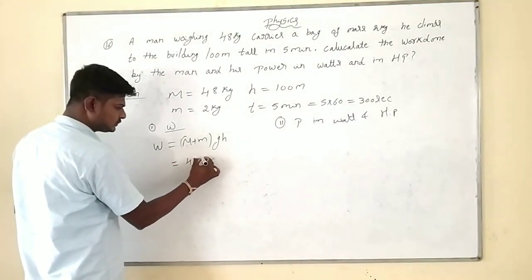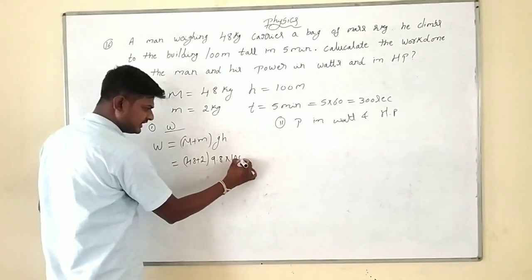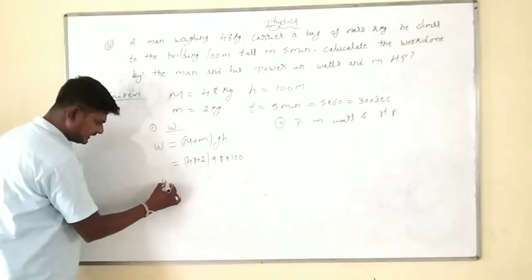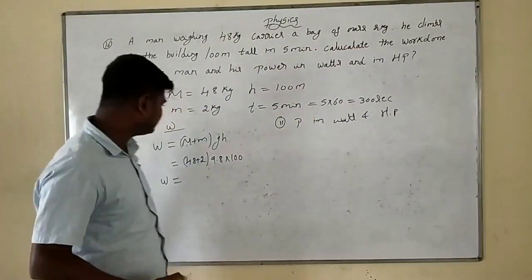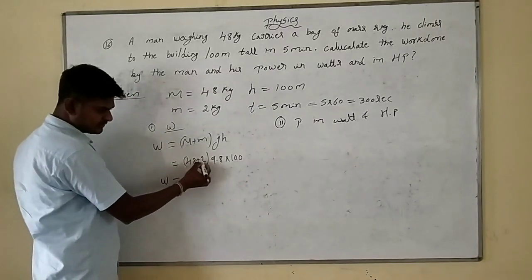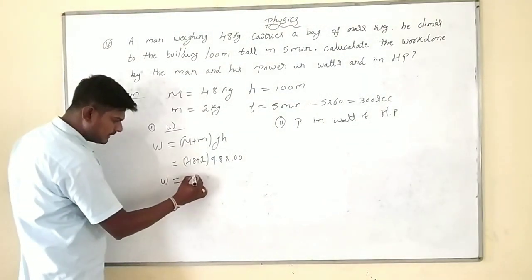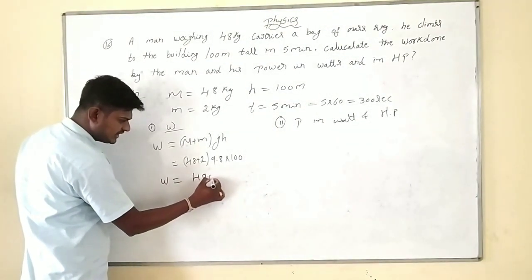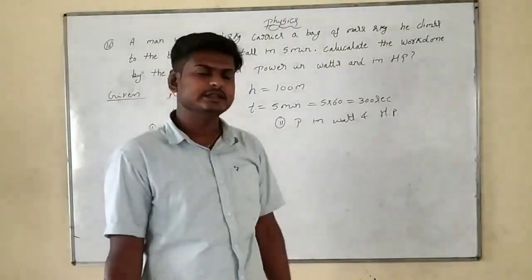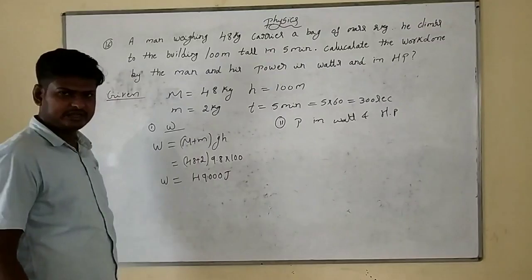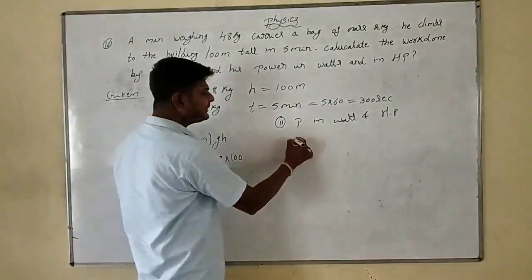48 plus 2 equals 50 kg total. g is 9.8 and h is 100 meters. When we multiply: 50 × 9.8 × 100 gives 49,000 joules. Work done equals 49,000 joules.